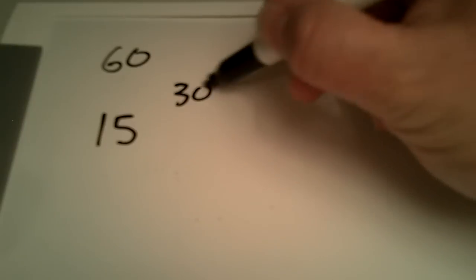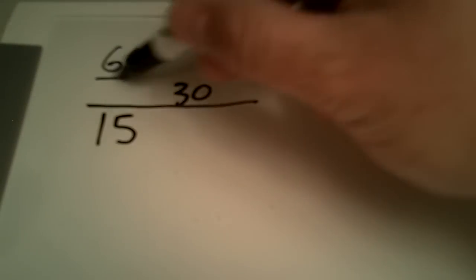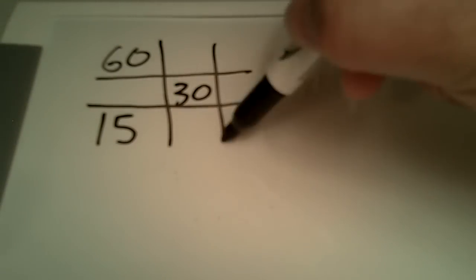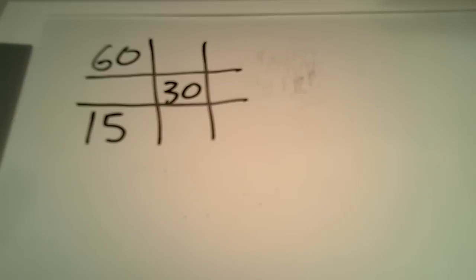We know we have a 60% ointment and a 15% ointment to make a 30% ointment. We'll draw out our tic-tac-toe grid and get to work on that. Something I like to do is just make myself a little note here that I have 75 grams of the 15% ointment.